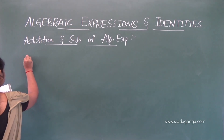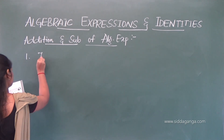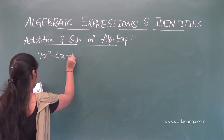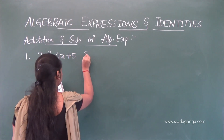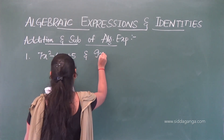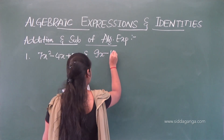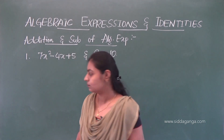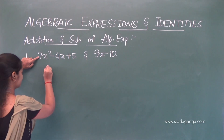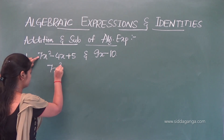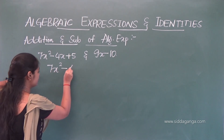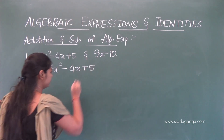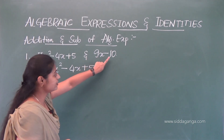One example: Add 7x squared minus 4x plus 5 and 9x minus 10. We can use row method and column method. So: 7x squared minus 4x plus 5, added to 9x minus 10.